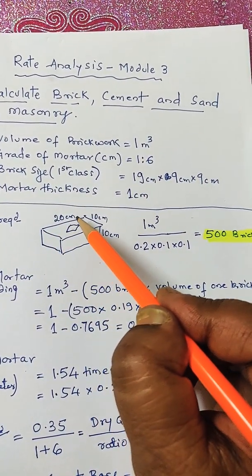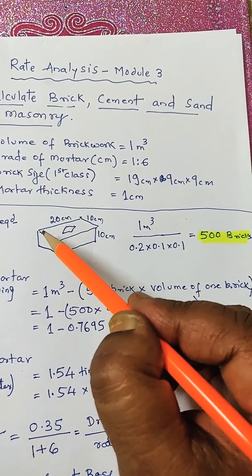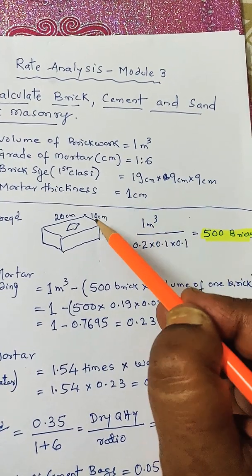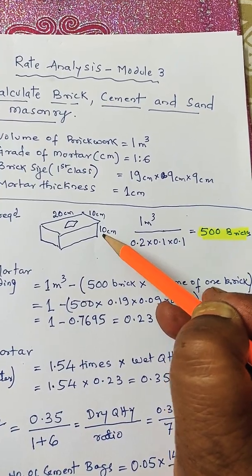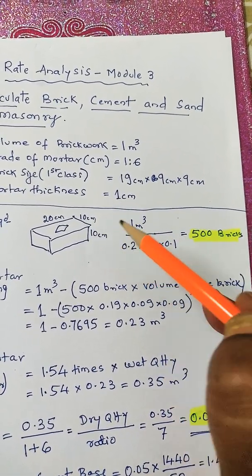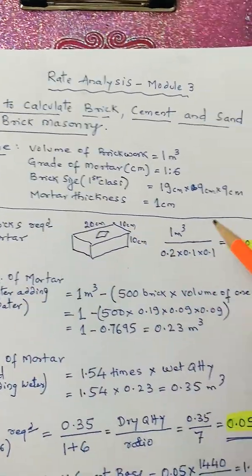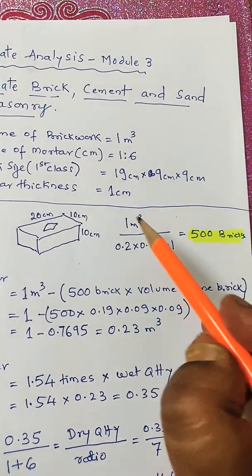So each brick is of size 20 centimeter with mortar, that is 19 plus 1 centimeter, then 10 centimeter on the width, then height is 10 centimeter, that is 9 centimeter plus 1 centimeter.